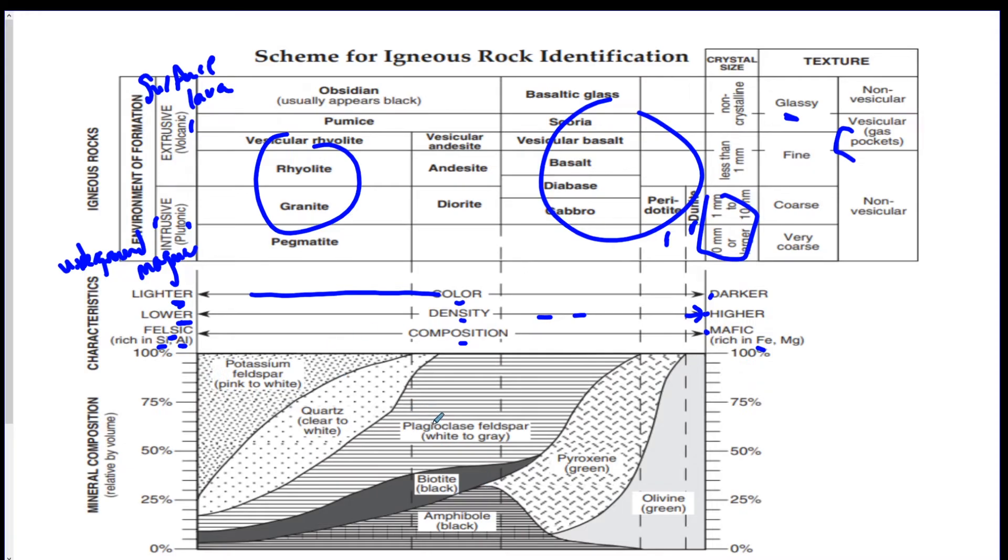If you go all the way to the right, follow the arrows to the right, that means you're talking higher density, darker color, mafic composition, which means it's rich in iron and magnesium. And the bottom shows the minerals that each of the rocks are composed of. So to figure out the minerals, say you want to figure out the minerals in basalt, you would just go straight down from the word basalt, go all the way down, and whatever minerals my line goes through is what minerals are in basalt generally.